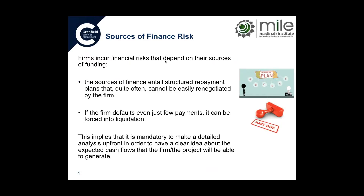Firms can renegotiate repayment plans. However, this has two major problems. Firstly, the new repayment plan has to be credible — the creditor can easily question it: if the original plan was flawed, why should the new one be good? The new plan is credible only when the cash flow problems stem from unexpected events. If the problems are simply the result of bad planning, it will be very difficult for the creditor to be confident in the new plan.